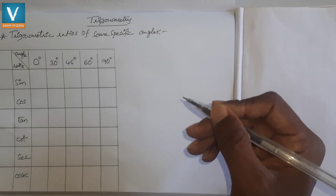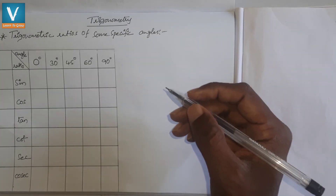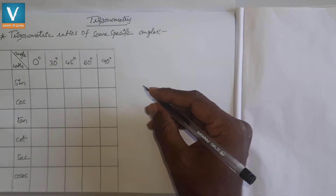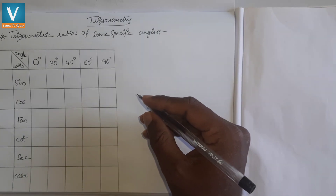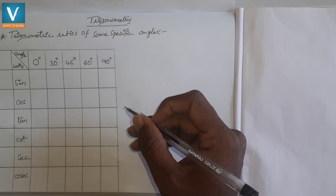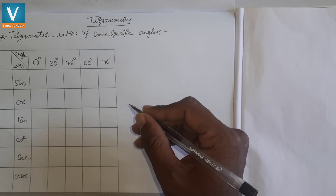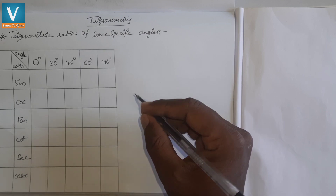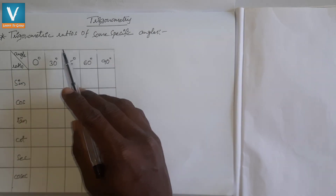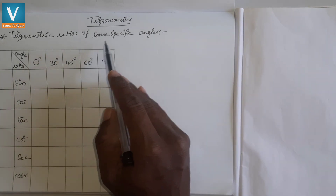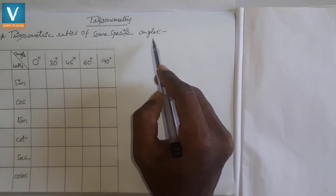Hello everyone, welcome to our channel V1 Education. In the previous class we discussed trigonometric identities and complementary angles. If you missed that class, I have a link in the description you can check. Today our topic is trigonometric ratios of some specific angles.